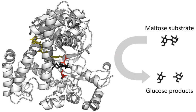Enzyme structures may also contain allosteric sites where the binding of a small molecule causes a conformational change that increases or decreases activity. A small number of RNA-based biological catalysts called ribozymes exist, which can act alone or in complex with proteins. The most common of these is the ribosome, which is a complex of protein and catalytic RNA components.